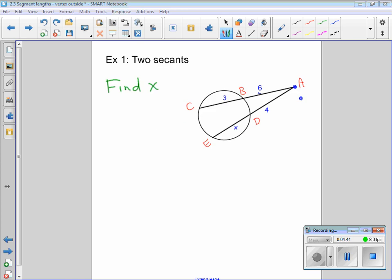Let's look at this example problem. Go ahead and write it into your notes. Let's apply our relationship of outside times the whole thing equals outside times the whole thing. I'm going to write that in first as my relationship, now I'm going to start putting the pieces into it.